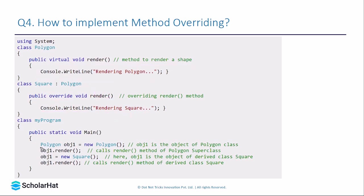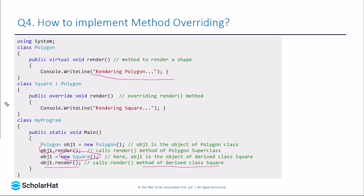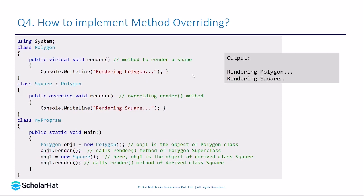In the example, we create an object of Polygon — obj1 — and call obj1.Render, which displays 'Rendering Polygon' from the base class. Then we create a child class object and call Render on it, which executes the derived class method. The output in the first case is 'Rendering Polygon' and in the second case is 'Rendering Square'. This is how method overriding works in C#.